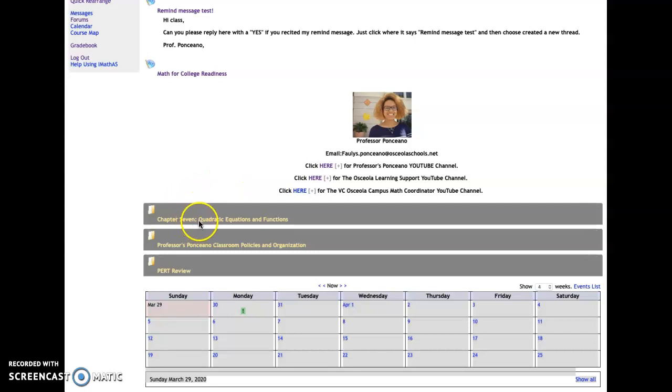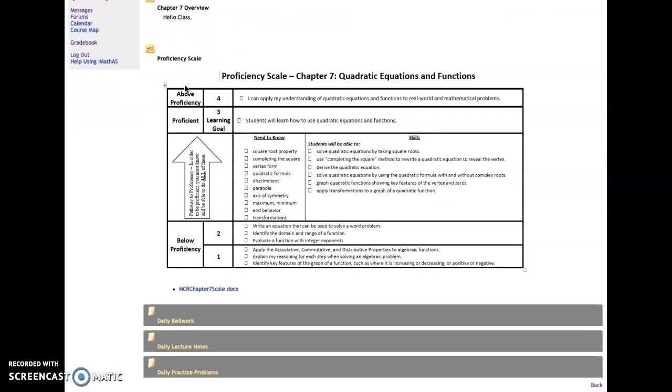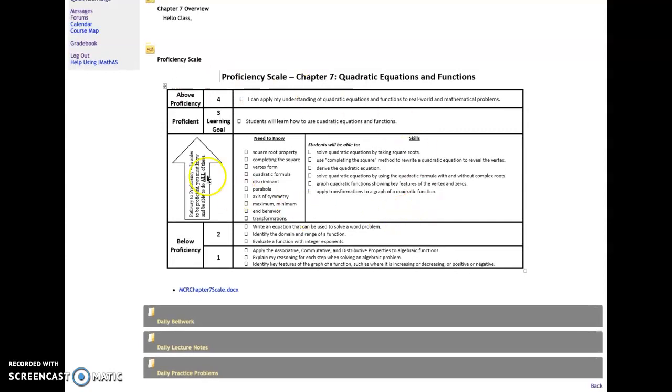Then we're going to look into chapter seven. So we're going to click chapter seven. In chapter seven, you're going to continue to see the proficiency scale.